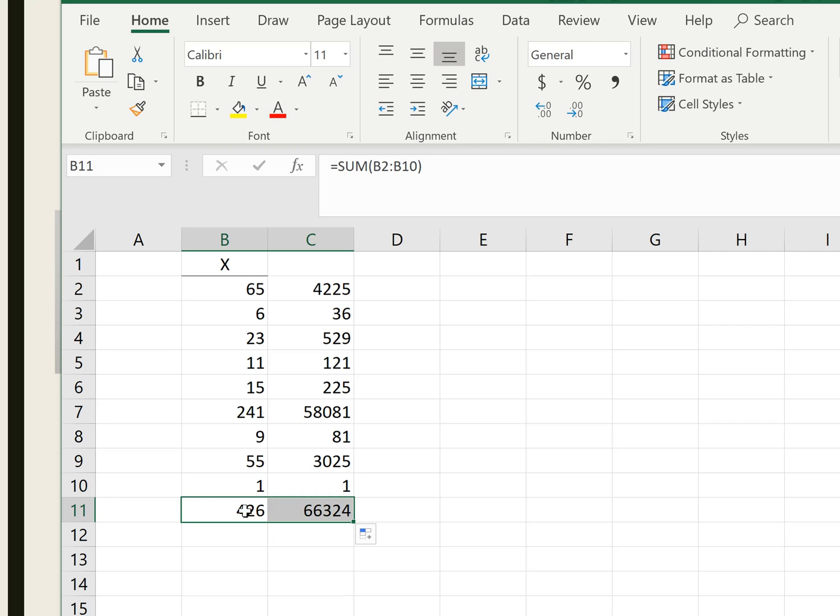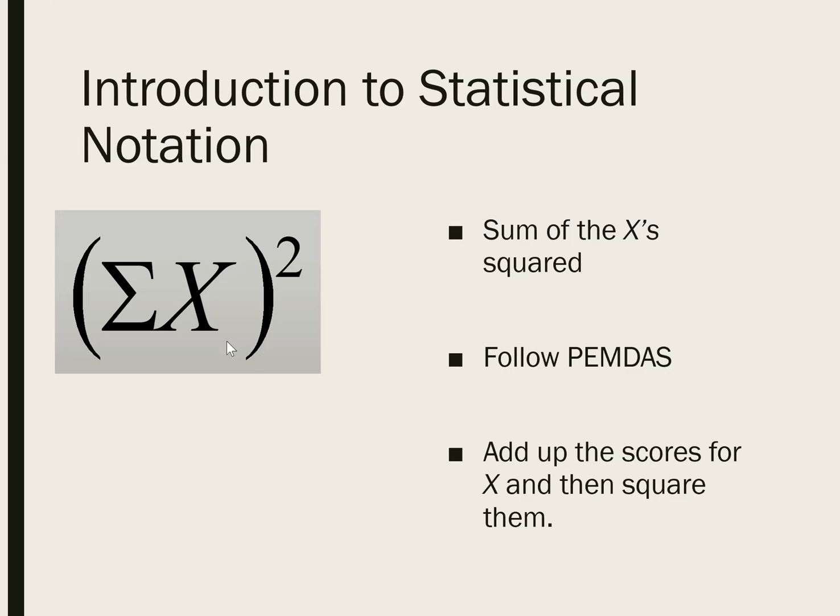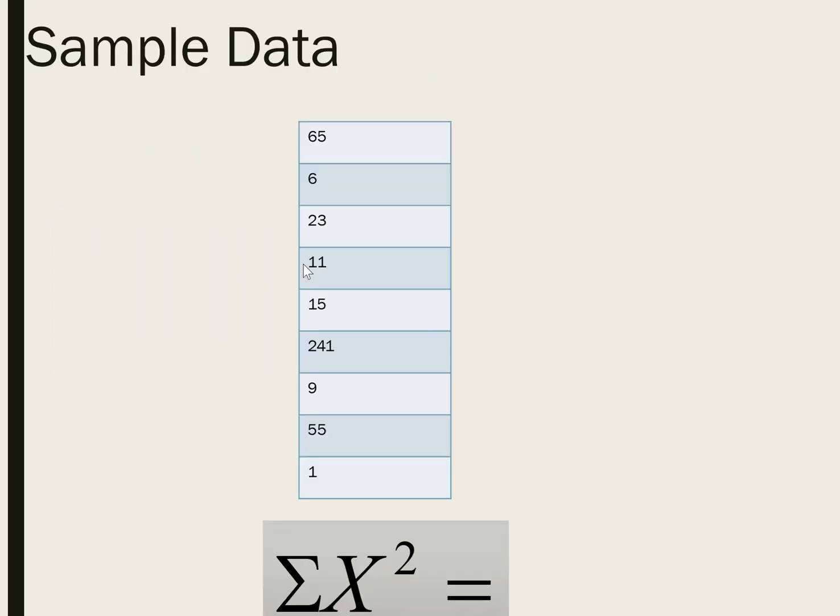So we already have sum of X, which is 426. So if we wanted to get sum of X squared, we would just square that number, which is 181,476. So that's how you get the sum of X squared, which is different from the sum of the squared X's.